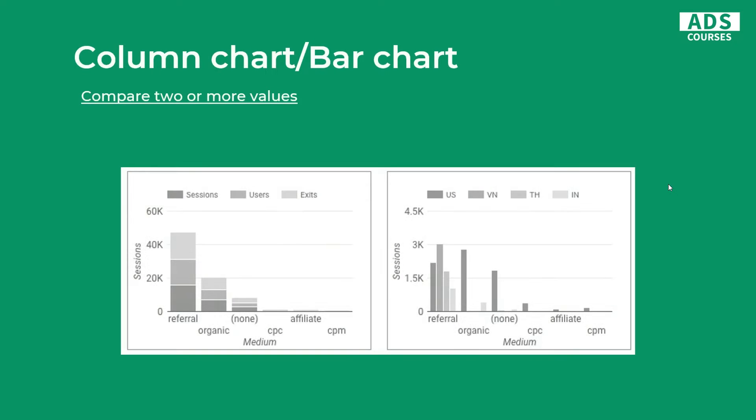The first and the most common chart type is the column or bar chart, and you simply use it to compare two or more values. It's very powerful when you want to compare metrics from different dimensions, for example. Later in this video I will show you bad and good examples of using each one of the chart types.